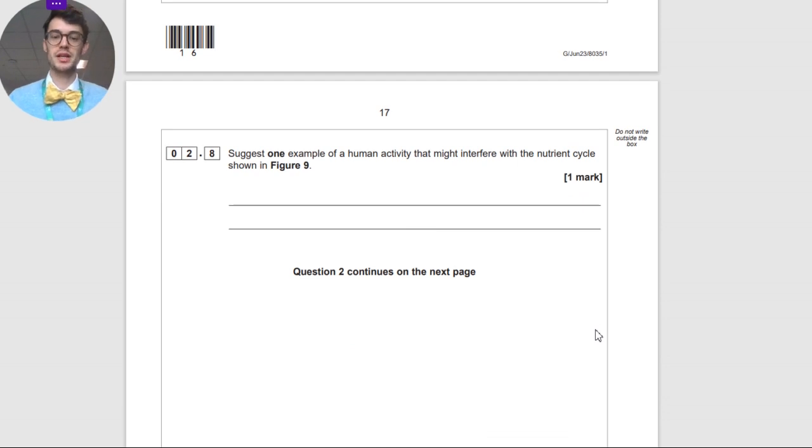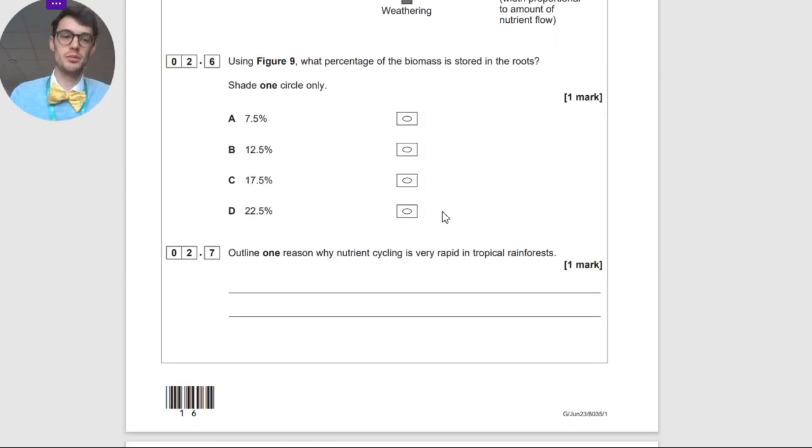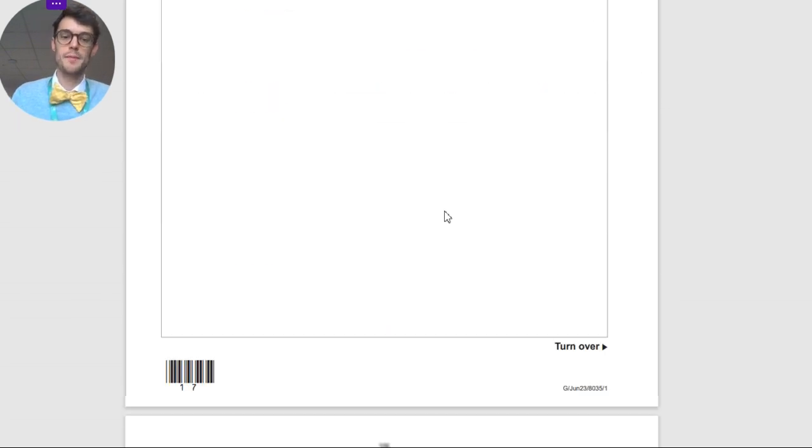So just one example of human activity that might interfere with the nutrient cycle shown in figure nine. In this case here, the biggest one is overgrazing. It could reduce the nutrients in the soil, but the big one is deforestation. You cut trees down, we reduce the biomass. Without biomass, you have less fallout pathway. You've got less litter. You've got less decay. You've got less in the soil. So deforestation is the single biggest one there to talk about.